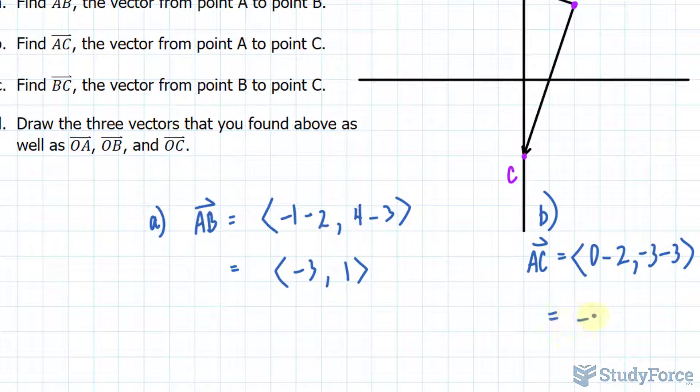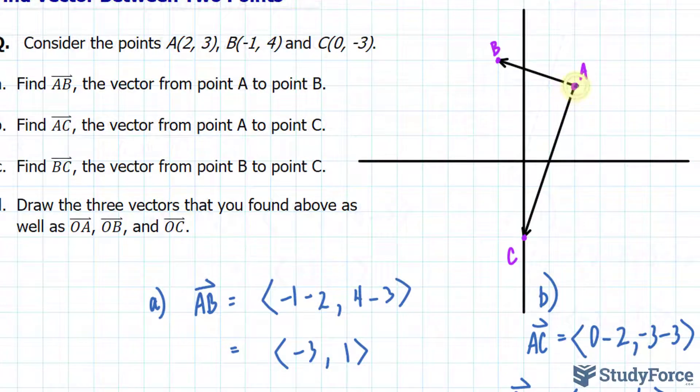0 minus 2 is -2 and -3 minus 3 is -6. That represents the components of that vector.